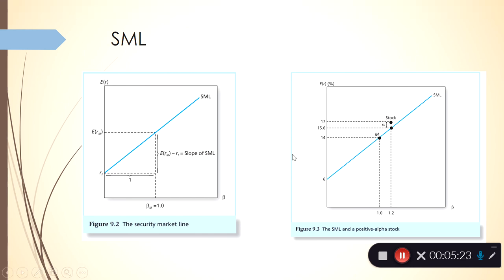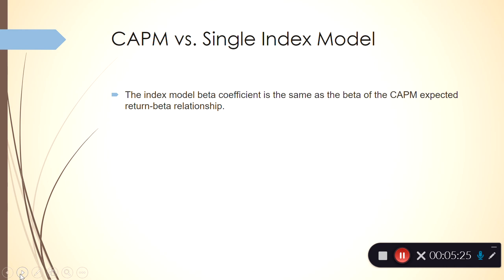That's the difference between CAPM and the single index model. With the single index model, the beta coefficient is the same as the beta of CAPM, but CAPM is about expected returns, which are in fact unobservable. When you do the single index model, you use actual returns; CAPM is about expected returns. And if CAPM holds, then the realized alphas should be equal to zero on average.